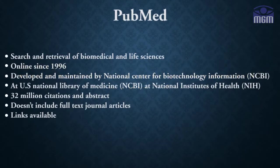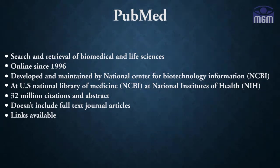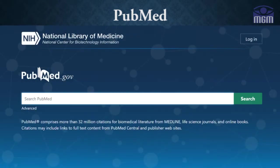PubMed is the most commonly used search tool for medical literature. It has been online since 1996 and was developed and maintained by the National Center for Biotechnology Information. It contains more than 32 million citations and abstracts. Although it doesn't include full-text journal articles, links to all are available.